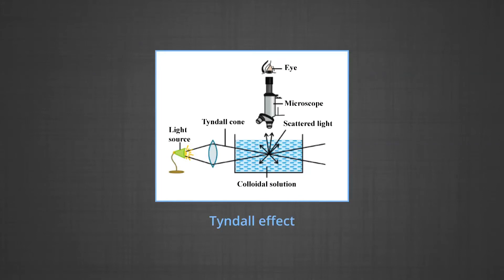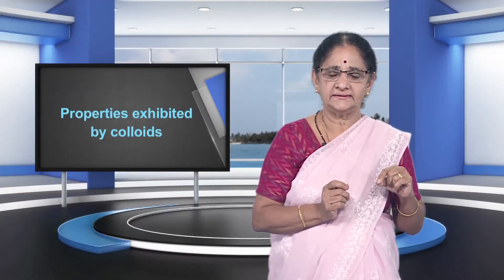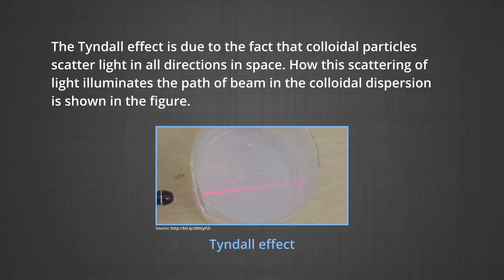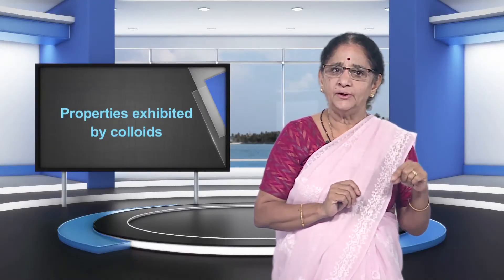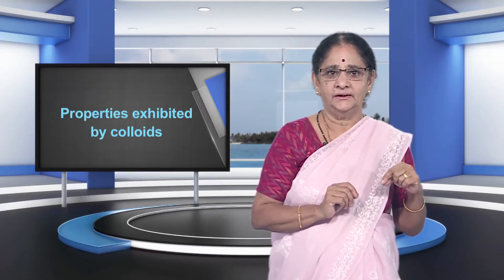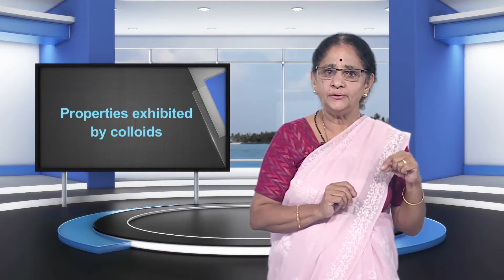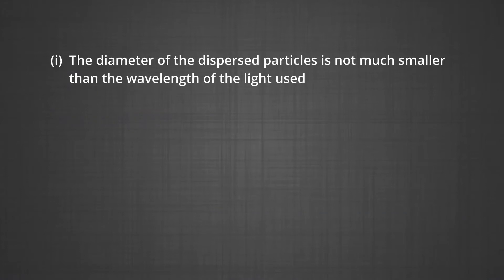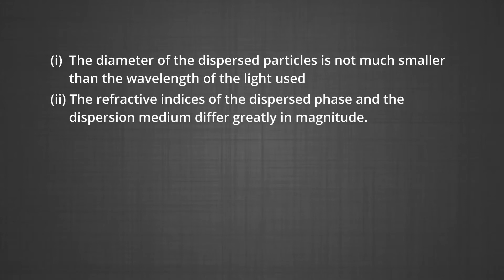This effect was first observed by Faraday and later studied in detail by Tyndall and is termed as Tyndall effect. As you see in the figure, when a colloidal solution is subjected to a beam of light from a source and then viewed through a microscope, we can see the bright cone of the light, called Tyndall cone. The Tyndall effect is due to the fact that colloidal particles scatter light in all directions in space. Tyndall effect can be observed during the projection of picture in the cinema hall due to scattering of light by dust and smoke particles. Tyndall effect is observed only when: number one, the diameter of the dispersed particles is not much smaller than the wavelength of the light used, and number two, the refractive indices of the dispersed phase and the dispersion medium differ greatly in magnitude.